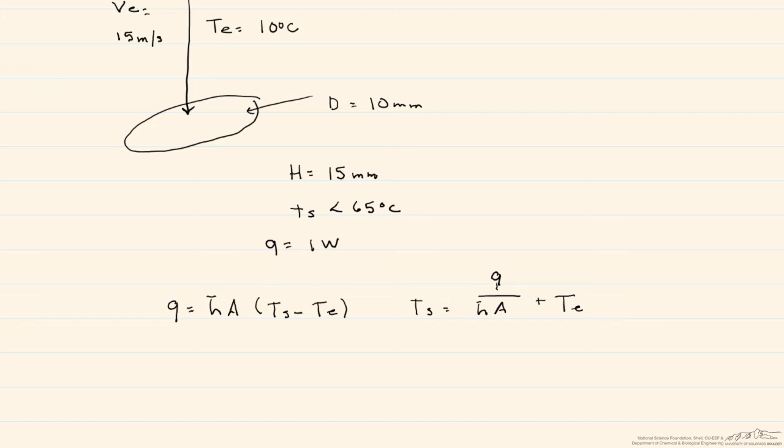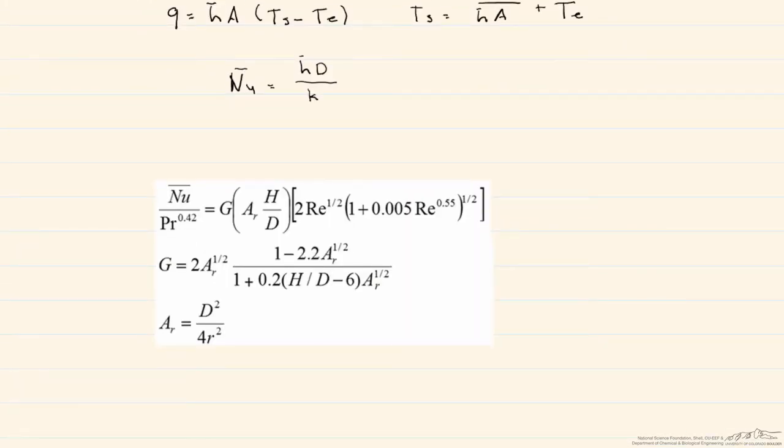To find H, we need a Nusselt number correlation, because the Nusselt number equals the heat transfer coefficient times the diameter divided by the thermal conductivity of the fluid. For one round nozzle and an impinging jet, we use this correlation. The best way to solve these types of correlations is to break it up into parts. First we calculate this, then put that in here for G.